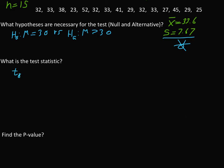So we find the test statistic: T equals X bar minus mu divided by S over square root of N, which is 33.6 minus 30 divided by 7.67 over square root of 15. T equals 1.82.